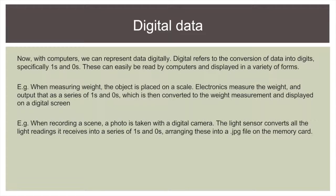For example, when we measure weight digitally, the object is placed on a scale. Electronics measure the weight and convert that to a series of ones and zeros, which is then converted to the weight measurement displayed on a digital screen. When we record a scene, we take a photo with a digital camera. A light sensor in the camera converts all the light readings it receives into a series of ones and zeros, arranging these into a JPEG file on the memory card.